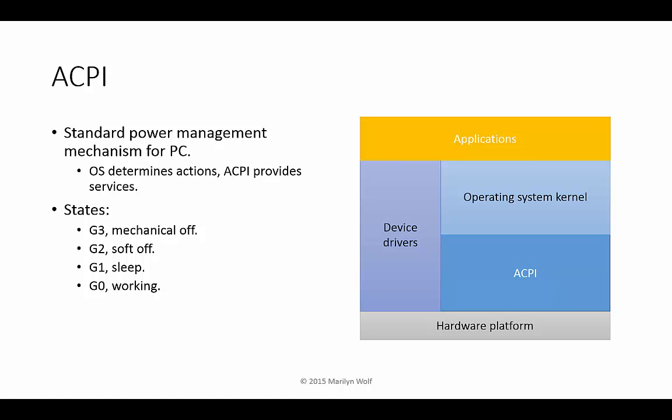A power manager developed for PCs and used in many systems is known as ACPI. ACPI provides services that the operating system can call upon to implement its policy. ACPI defines several different power states: G3 is mechanical off (a switch that turns off all power), G2 is a soft off state where a few components may be in standby, G1 is a sleep mode, and G0 is working.